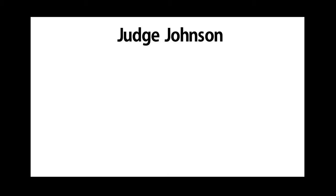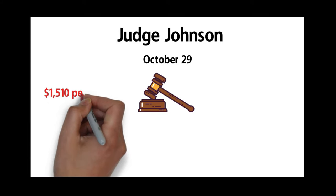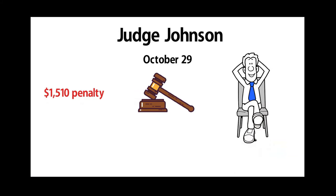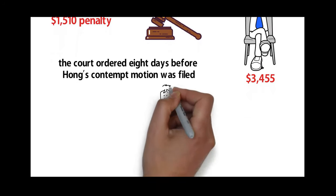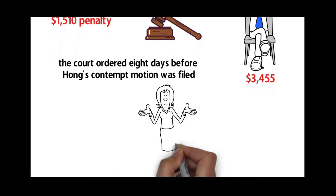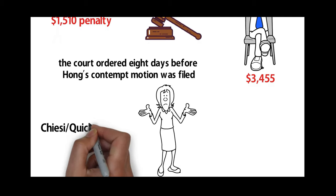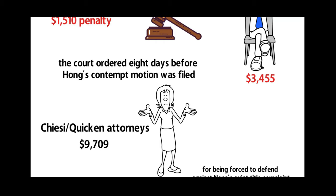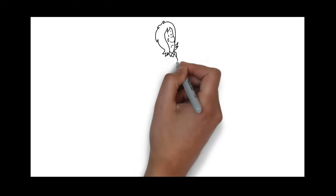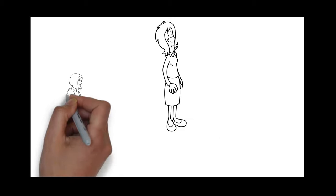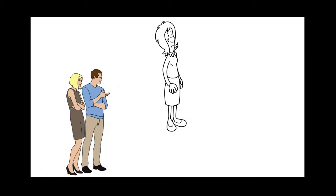Judge Johnson will decide on October 29th whether to grant Hong's motion to find Nona a new $1,510 penalty for not paying Hong the $3,455 the court ordered eight days before Hong's contempt motion was filed. At that same October 29th hearing, Judge Johnson will decide whether Nona must pay the Chessie Quicken attorneys $9,709 for being forced to defend against Nona's quiet title complaint filed against parties who claimed an adverse interest.